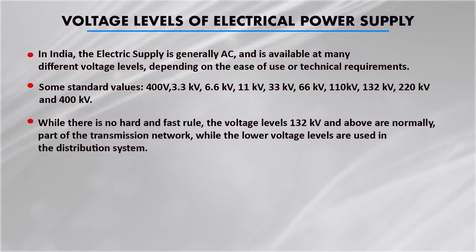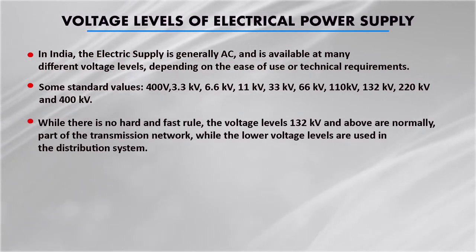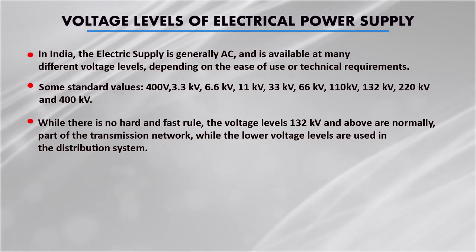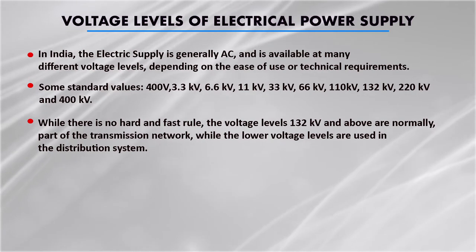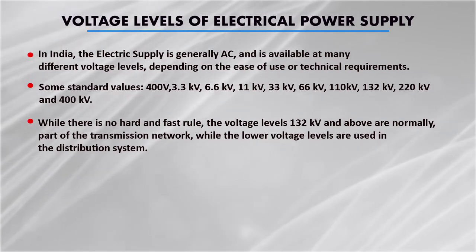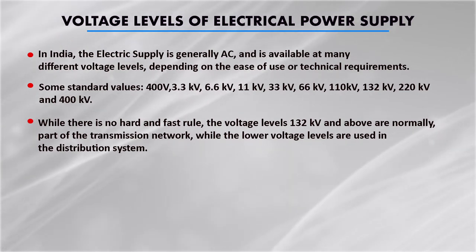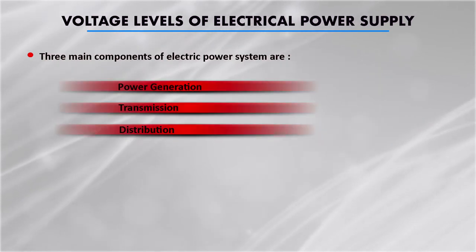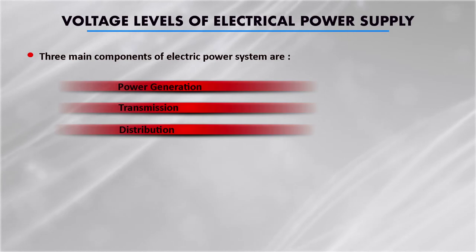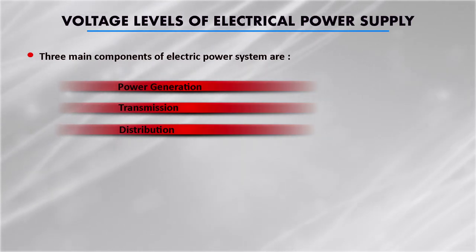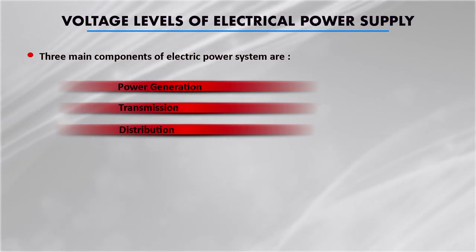There is no hard and fast rule about what should be the voltage level for the transmission network or distribution system. But generally voltage levels of 132 kV and above are part of the transmission network — that means high voltages are used for transmission of power. The basic three components of the electrical power system are power generation, power transmission, and power distribution.